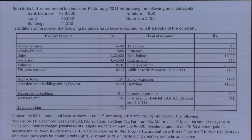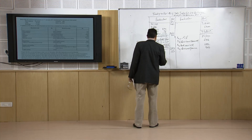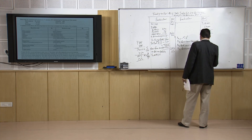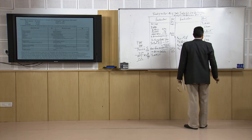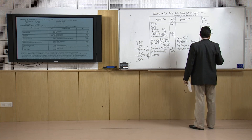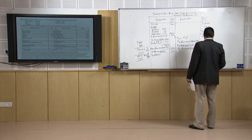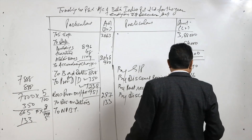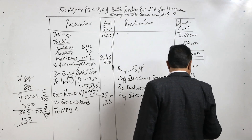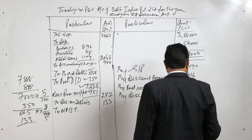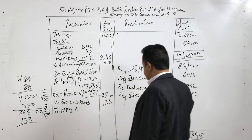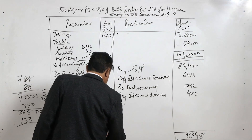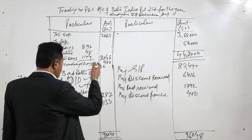Now let us calculate the net profit before tax — NPBT. If you total up the credit side, it comes to 96,048 rupees. The credit side is bigger than the debit side, so we are going to end up with a profit. Net profit before tax works out as 70,085 rupees.